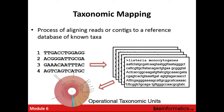Taxonomic mapping is the process of taking reads and comparing them to a genomic database where the organisms harboring those sequences are known and assigned to those sequences. By making that comparison, we can infer — as long as the match has high enough specificity — that our sequence came from that organism as well.